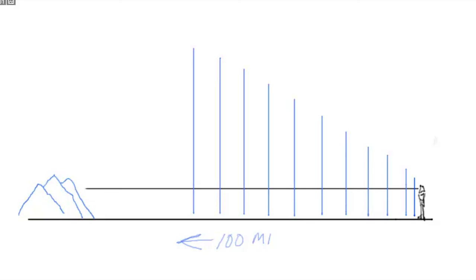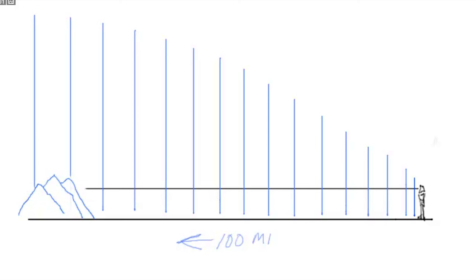The water droplets are made of water, so they have a bluish tint to them. As the distance increases you look through more and more of these layers. Eventually you're looking through thousands or millions of these water droplets, so objects in the distance start appearing bluer and bluer, and at the same time their value increases — they get lighter and lighter as they move toward the horizon or into the distance.